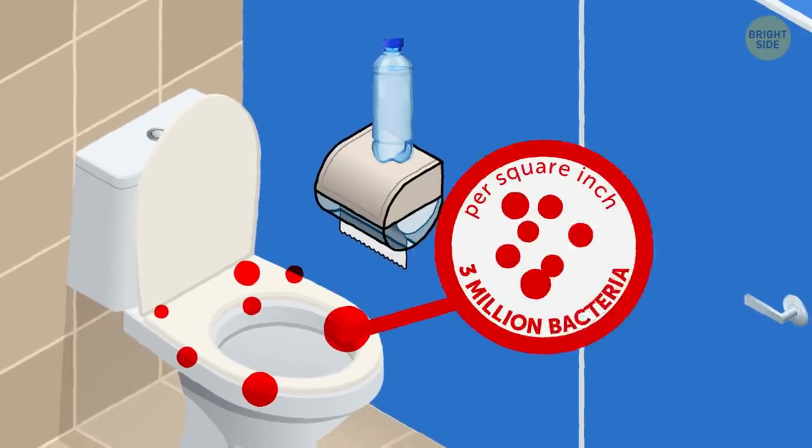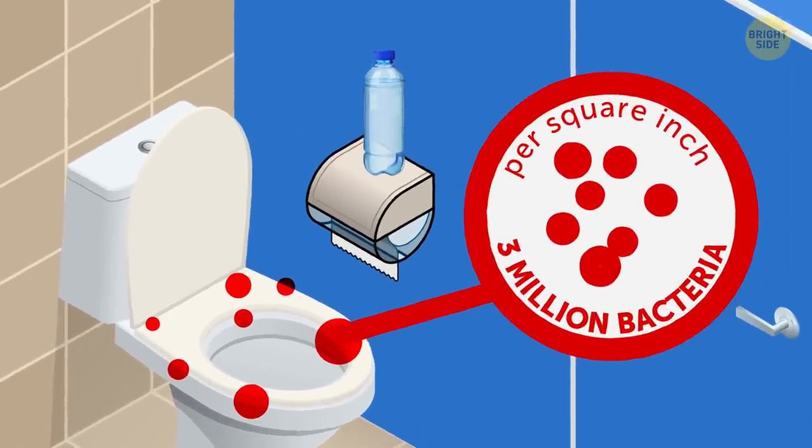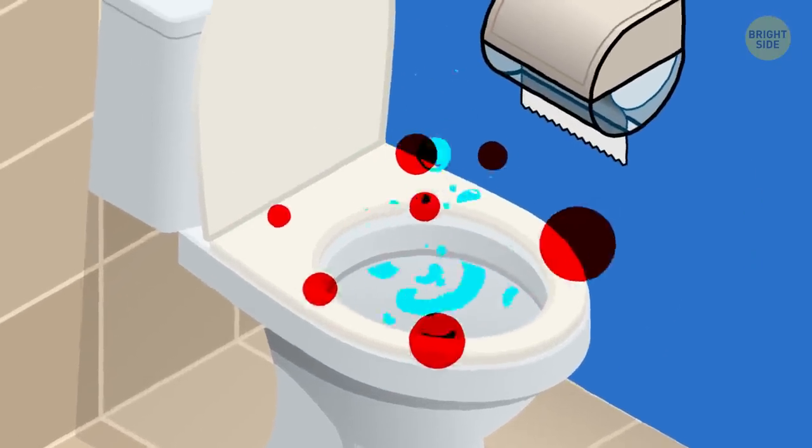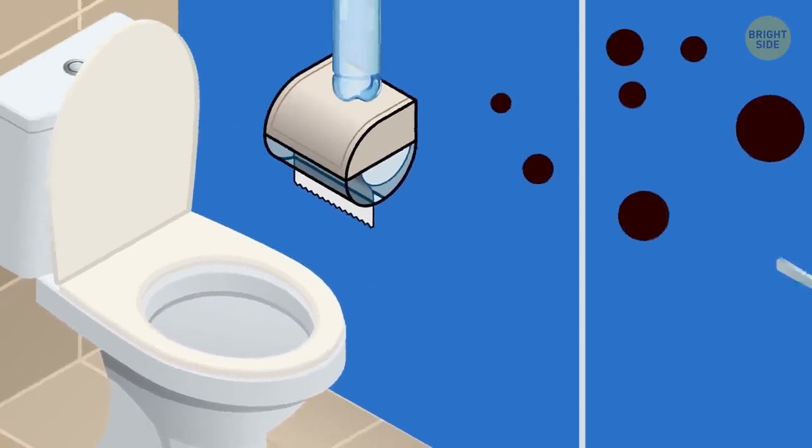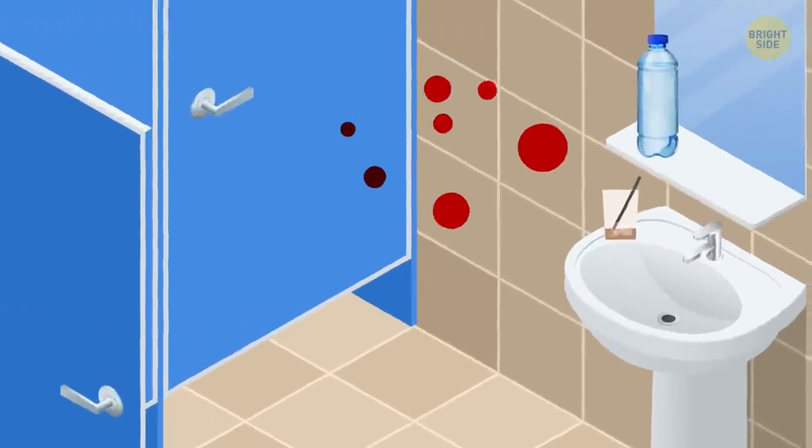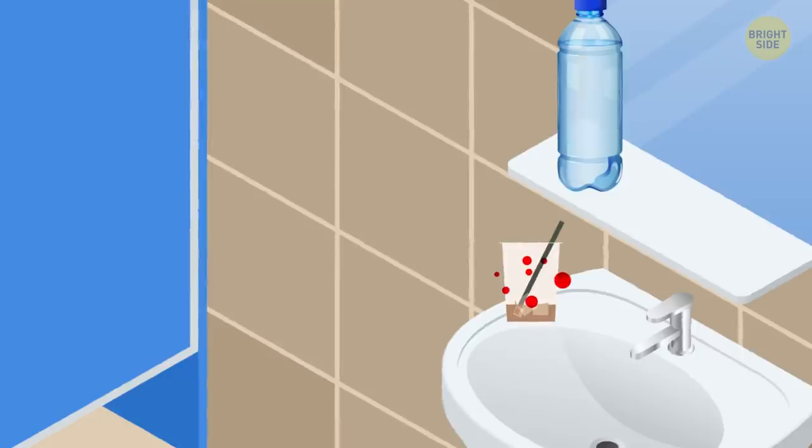There are over 3 million bacteria per square inch in that toilet bowl, just to give you some perspective. When you flush, all that bacteria is pushed up into the air from the bowl and that piping that sucks all the water down. All that bacteria will cling to your mug or cup.